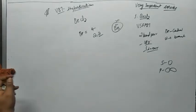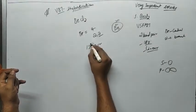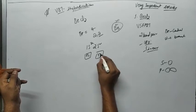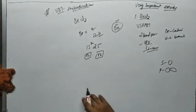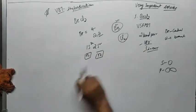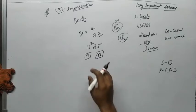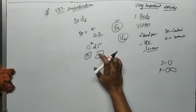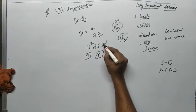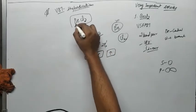The electronic configuration of beryllium is 1s² 2s². Both the 1s and 2s orbitals are fully filled, so chlorine cannot share electrons with beryllium in this state. As per hybridization, one electron jumps from the 2s orbital to the next orbital — the 2px — making two unpaired electrons available.